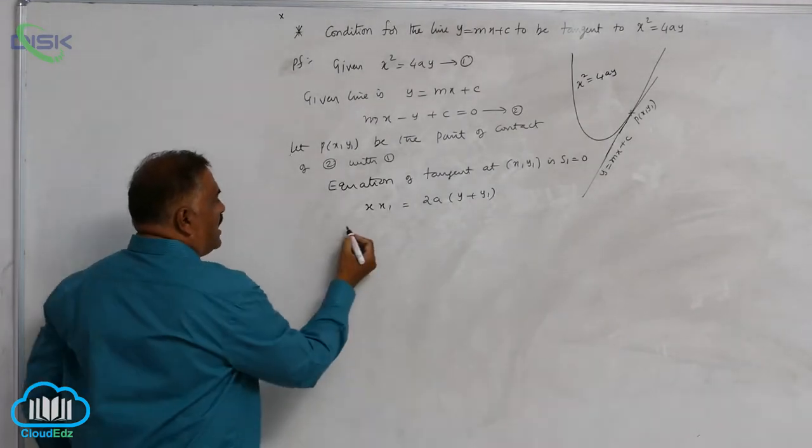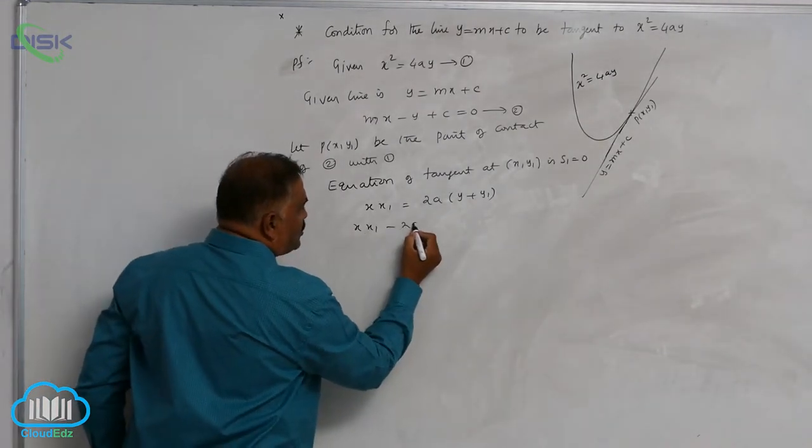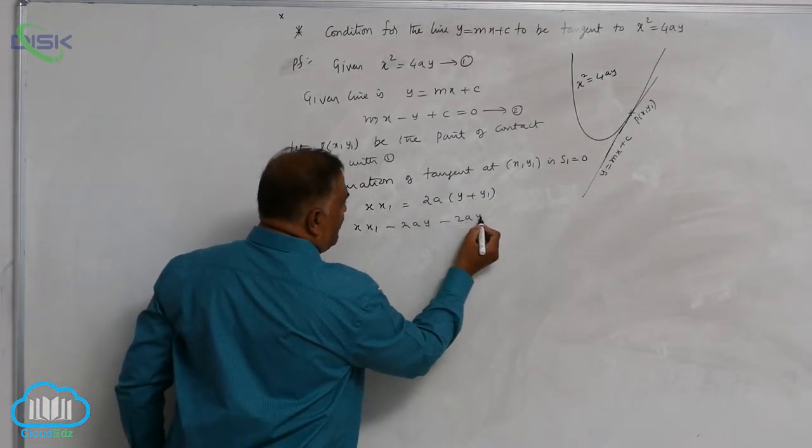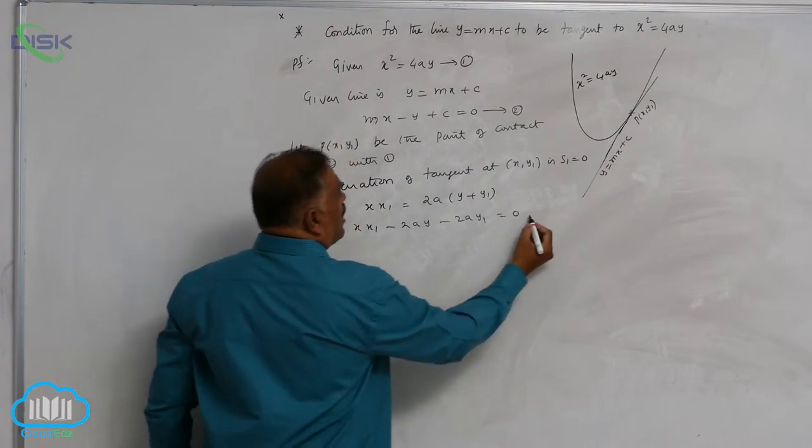We are rearranging the terms: xx1 minus 2ay minus 2ay1 is equal to 0. Call it equation 3.